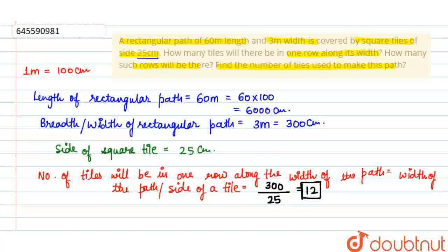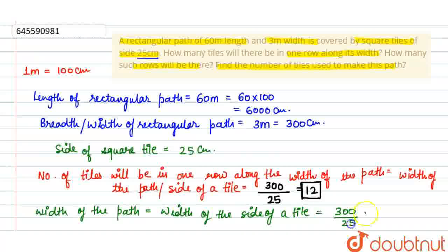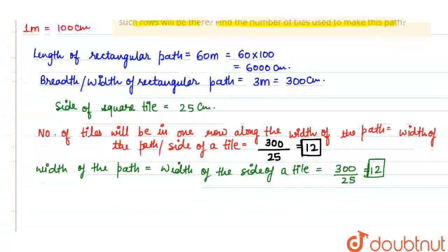Now the next part: how many such rows will be there? Width of the path equals to width of the side of the tile, which is 12. 300 divided by 25, this is 12.